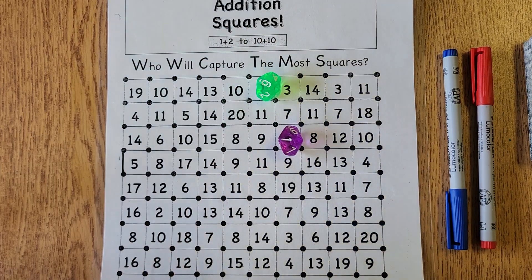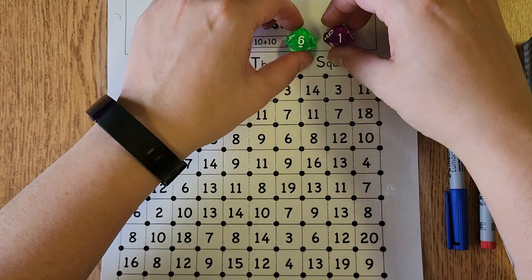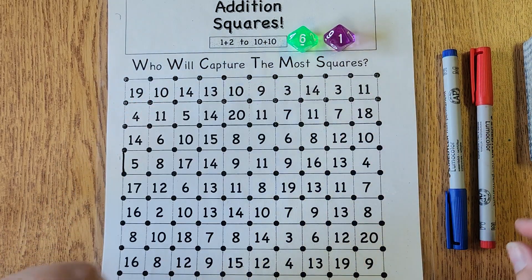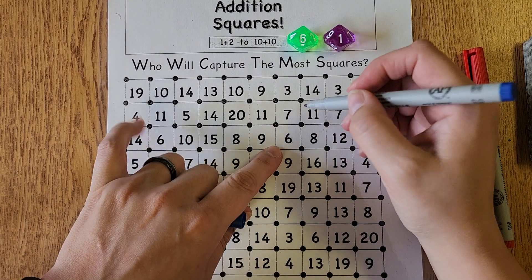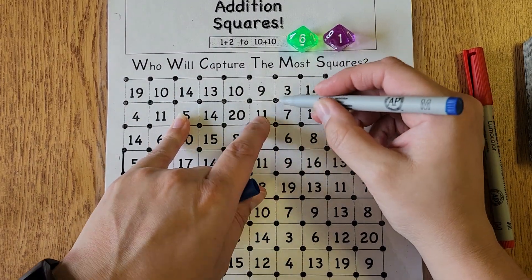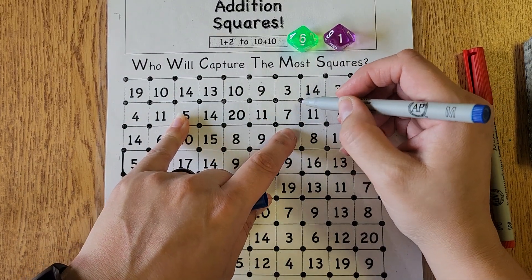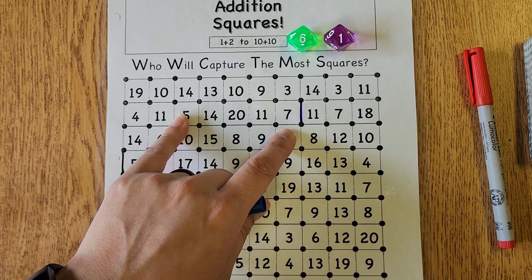So for example if I roll the dice I have a six and a one. Six plus one makes seven. My turn I'm going to find a seven and I'm going to connect the dots around the seven but only on one side, like so.